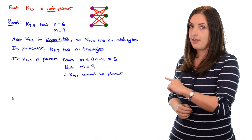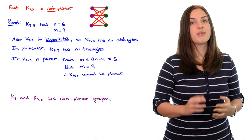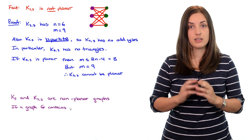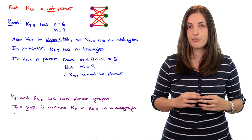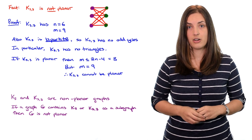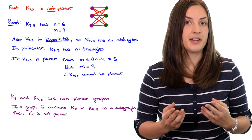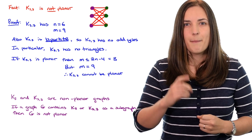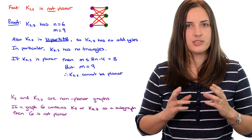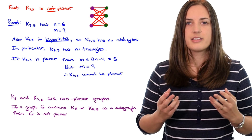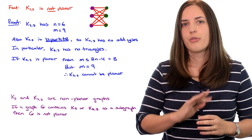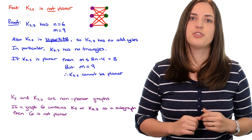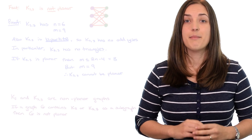We've now seen that K5 and K3,3 are non-planar graphs. It should be clear that if a graph G contains either K5 or K3,3 as a subgraph, then G is also non-planar. In other words, a planar graph is forbidden from having K5 or K3,3 as a subgraph. Fascinatingly, these two graphs are essentially the only forbidden subgraphs, which leads into Kuratowski's theorem — we'll look at that in the next video.